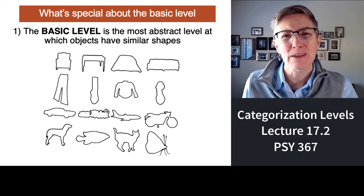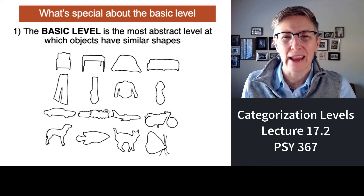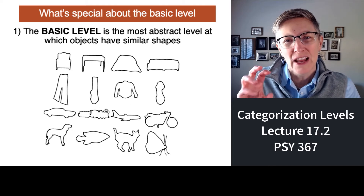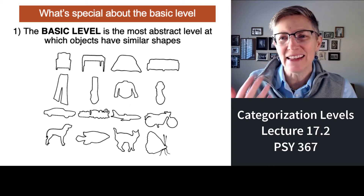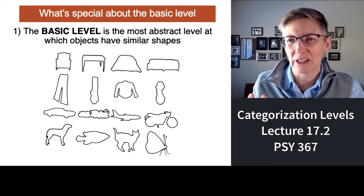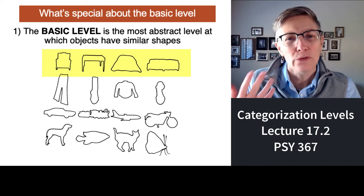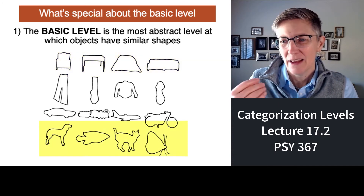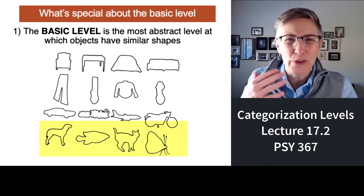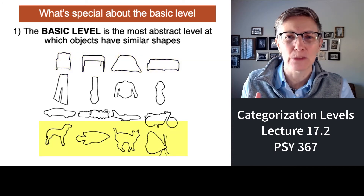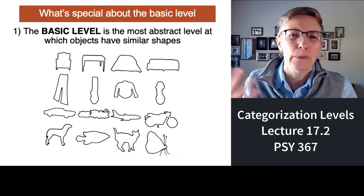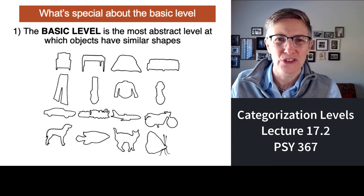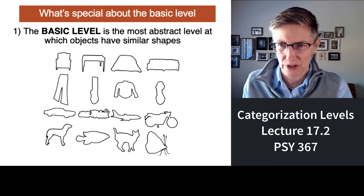I'm going to show you data points that support the idea that basic level category is our preferred category. The first is that basic level categories are the level at which shapes or outlines tend to have some similarity. Furniture tends to have similar shapes — right angles — while animals tend not to, that sort of thing.